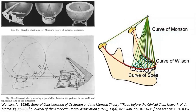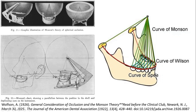What are these compensatory curves? First, Monson's theory of spherical occlusion states that when we draw a sphere of four-inch radius with the center at the glabella, the occlusal surface of all the teeth falls on the surface of the sphere. If we check this part of the sphere, we get a three-dimensional curve made up of two curves: the anteroposterior curve and the mediolateral curve. This three-dimensional curve is called the curve of Monson.